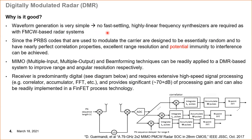Why is DMR good? The wave generation is relatively simple — you don't have to have fast-settling, highly linear frequency synthesizers, as is typically required in frequency-modulated continuous wave FMCW radar generating frequency chirps. This is much simpler. The codes used are carefully designed to have really good, nearly perfect correlation properties, and they provide excellent range resolution and potential immunity to interference.